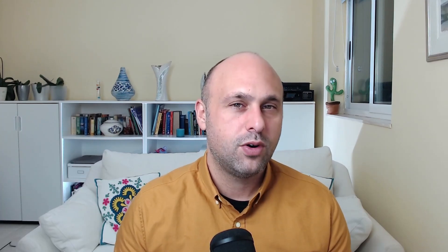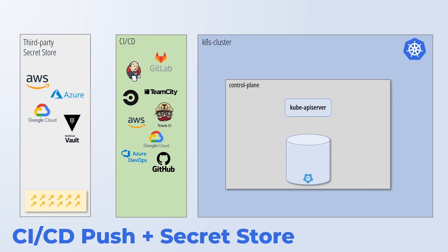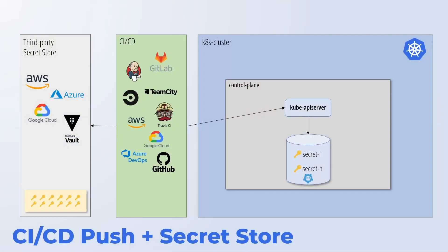We can improve this option by using a proper secret store — either one of the services offered by the main cloud providers or a tool like HashiCorp Vault. In this setup, secrets are stored on the secret store and retrieved by the CD pipeline only on need. The advantage is that we are now using a solution purposely built to manage secrets, making it much easier to audit changes and achieve compliance with security standards. However, we still have not solved the issue of needing to expose Kubernetes and its credentials to the CD tool.